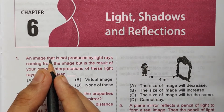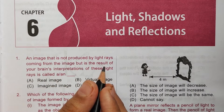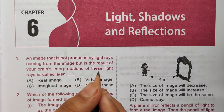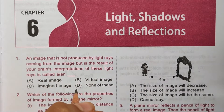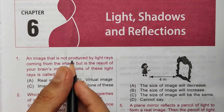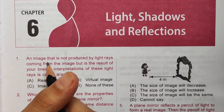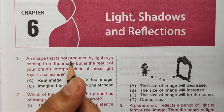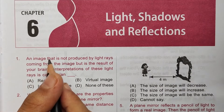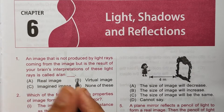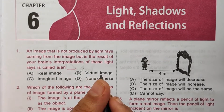First question: an image that is not produced by light rays coming from the image, but is the result of your brain's interpretation of these light rays, is called a what? An image that is not produced by light rays is called a virtual image, and an image that is produced by light rays is called a real image. Since they asked for the one not produced by light rays, the correct answer is option B: virtual image.